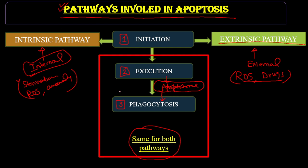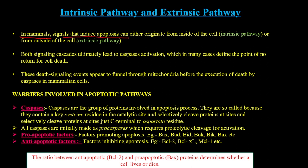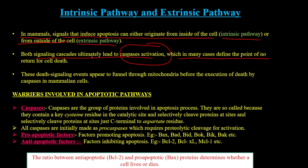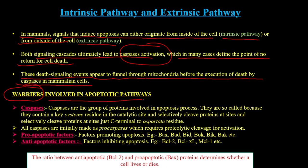In the intrinsic pathway, signals can originate from inside or outside the cell. Both signaling cascades ultimately lead to caspase activation, which defines the point of no return for cell death. These death signaling events are funneled to the mitochondria before execution of death by caspases in mammalian cells. The first molecular player is caspases — proteases that contain a key cysteine residue in the catalytic site and selectively cleave protein at a site just C-terminal to an aspartate residue.